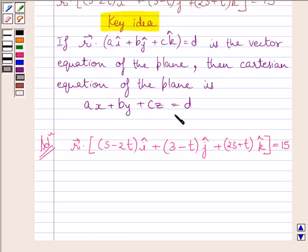Clearly we can see this given equation of the plane is in this form. Now if we compare these two equations, we get A is equal to S minus 2T. B is equal to 3 minus T and C is equal to 2S plus T.